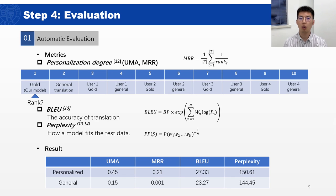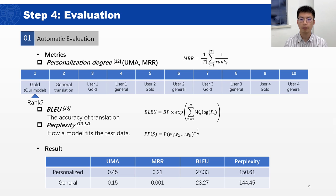In step 4, we present the evaluation for our user-oriented personalized machine translation model. The automatic evaluation aims to evaluate the personalized degree and accuracy of the personalized translation results in comparison with general translation results. We evaluate the personalized translation model using common metrics for personalized language model evaluation and machine translation model evaluation. These metrics include personalized degree, BLEU, and perplexity. The results indicate that our model can generate more personalized translation results by learning users' language style preferences from their Weibo posts.